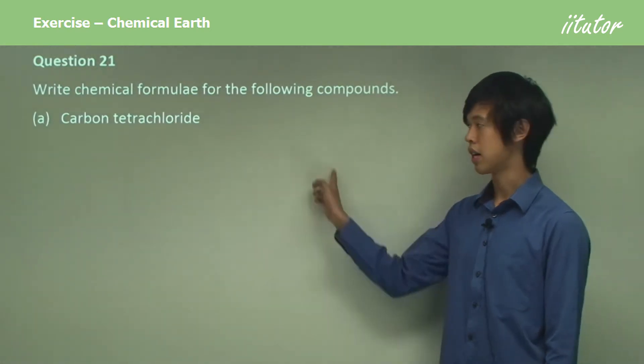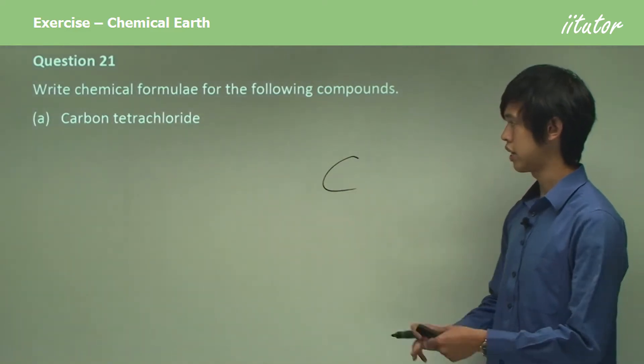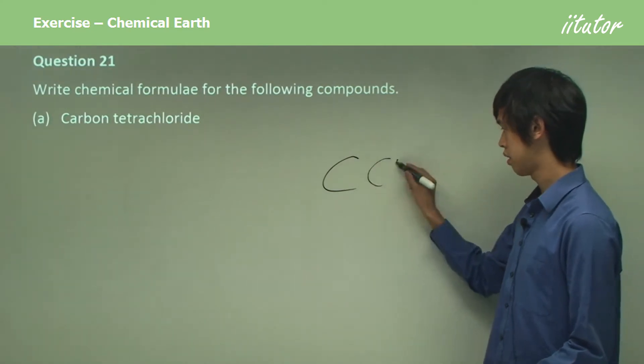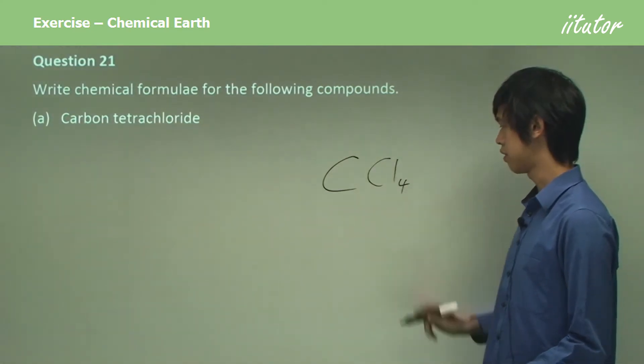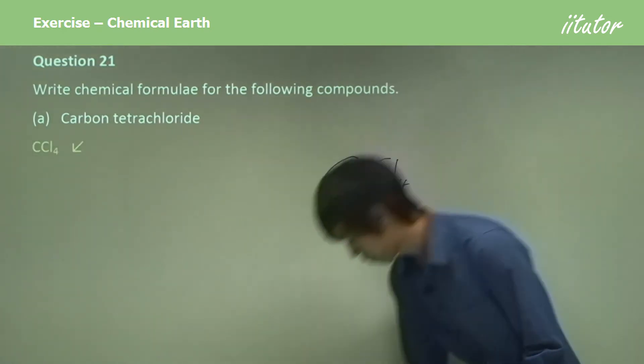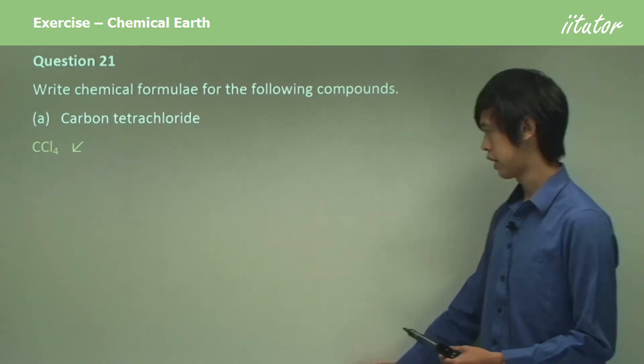So carbon is carbon. Tetra means 4, and chloride is Cl. So there must be 4 Cl. So it must be CCl4. There you go. Okay, easy.